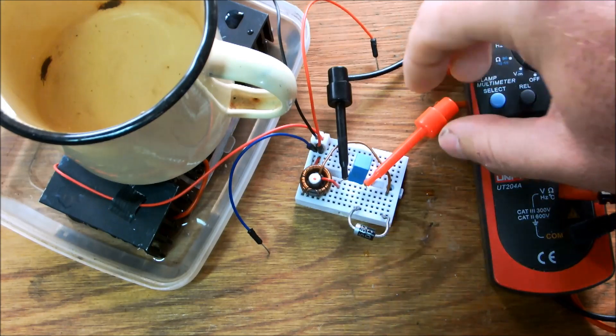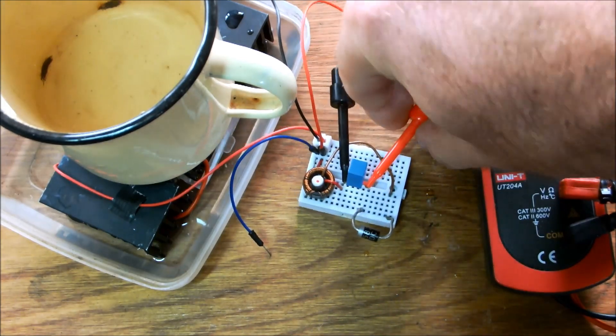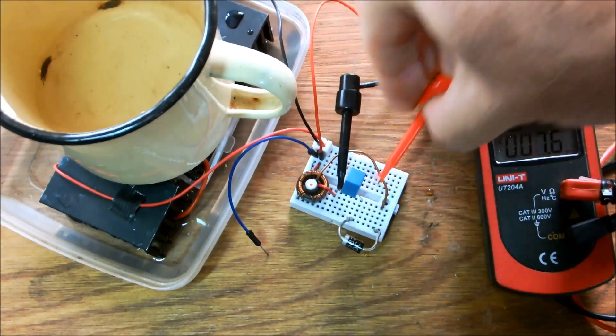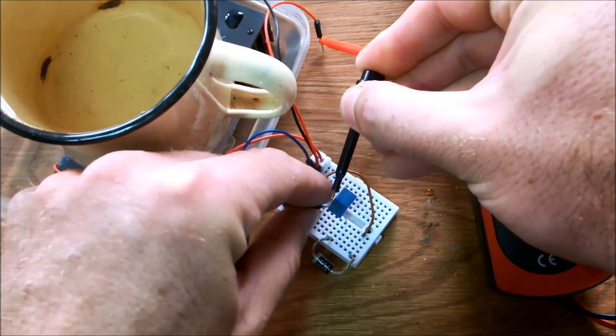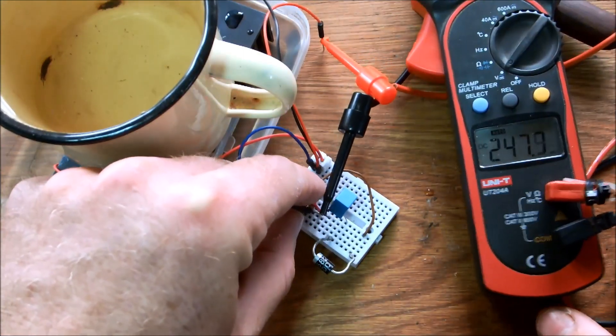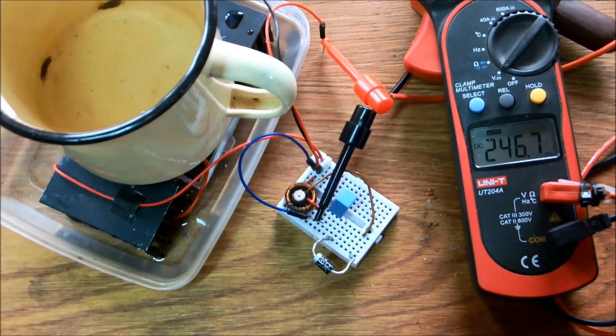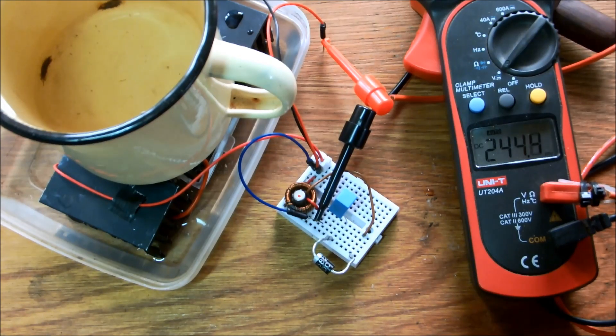While we are at it let's take the voltage across the Peltier plate itself. That is 245 mV.